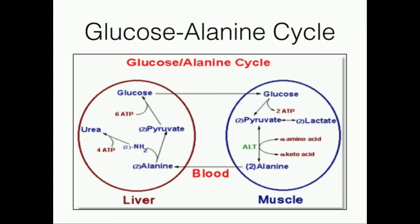Starting in the muscle: glucose reacts with all the enzymes in glycolysis, and glycolysis breaks that glucose down into pyruvate. The pyruvate can certainly be converted to lactate, which is what we saw in the Cori cycle. However, the pyruvate can also react with an enzyme referred to as ALT, which stands for alanine transaminase. Alanine transaminase converts pyruvate into alanine — a normal amino acid found in muscle, but not being incorporated into proteins here.